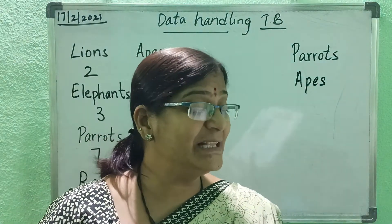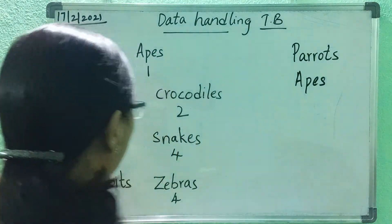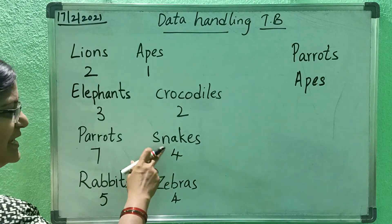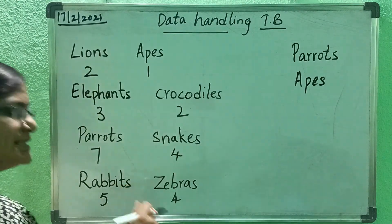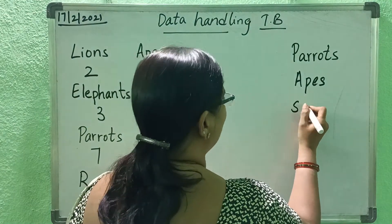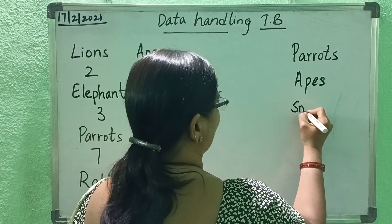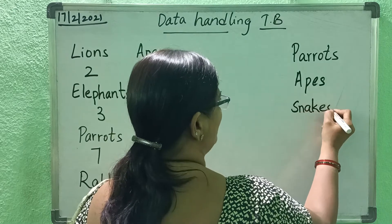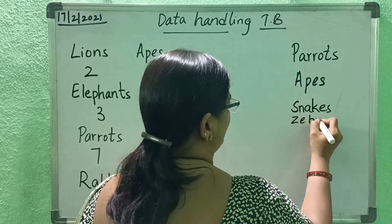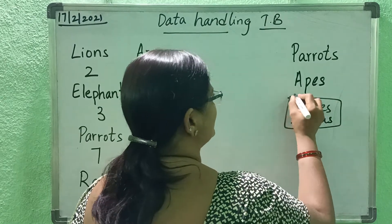Which animals are equal in number? Equally the same in number? Snakes and zebras. In that box write both names — snakes and zebras.